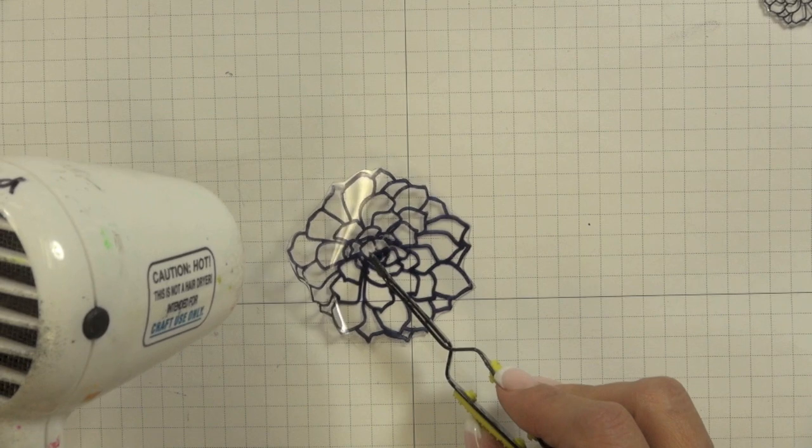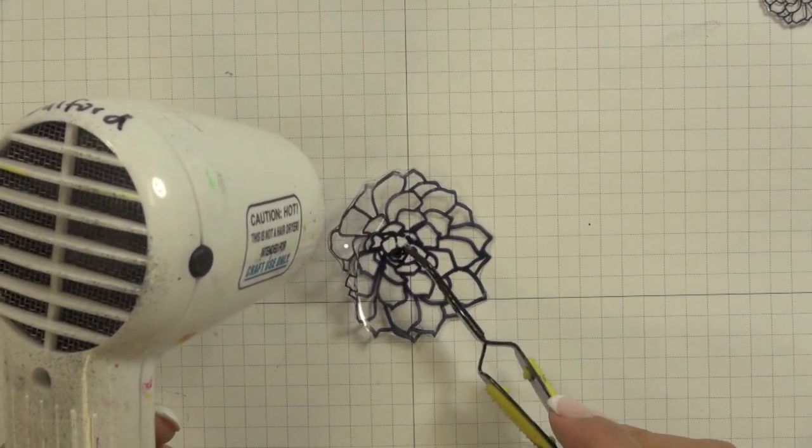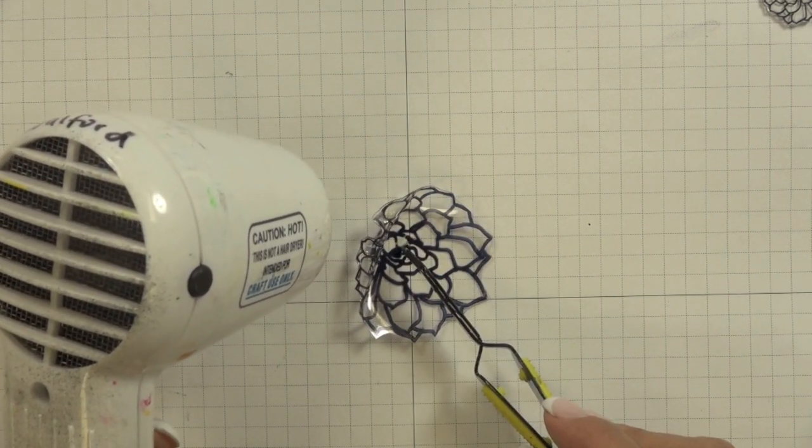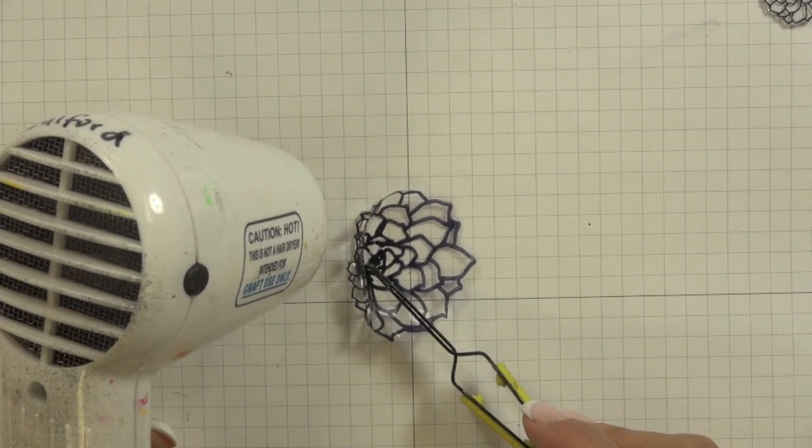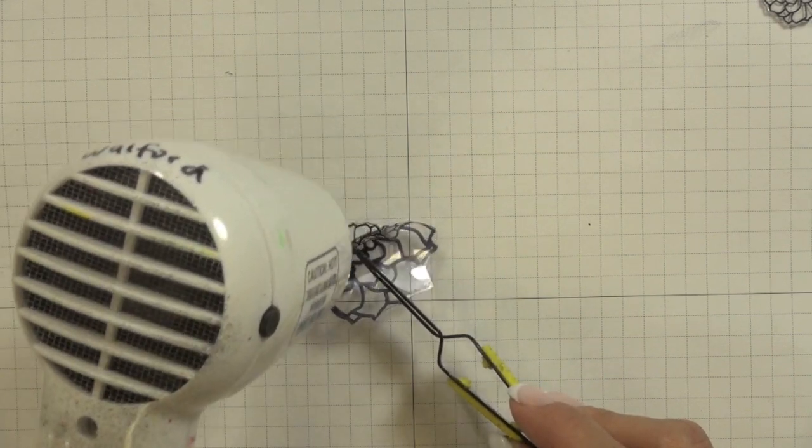Now working with shrink plastic is super fun and super easy. I put my piece on my table in front of me lightly held the center down with the tip of my tweezers and then just started heating it with my Ranger heated craft tool.